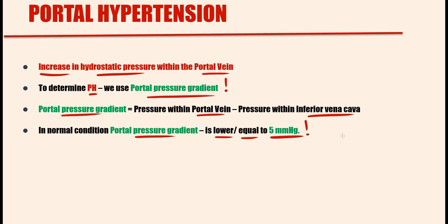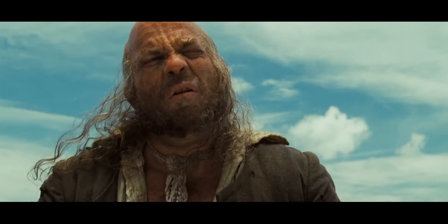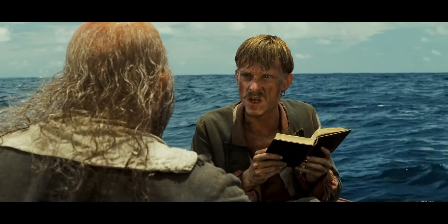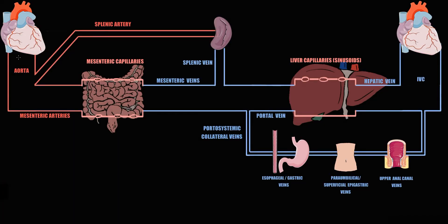To understand what portal pressure gradient is, we have to recall splanchnic circulation. Initially the left ventricle pushes blood into the aorta, and from the aorta blood goes into the splenic artery that supplies blood to the spleen, and mesenteric arteries that supply blood to the intestine, where in mesenteric capillaries fluid exchange occurs.